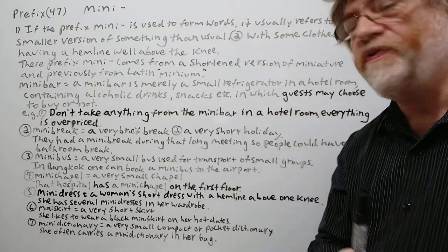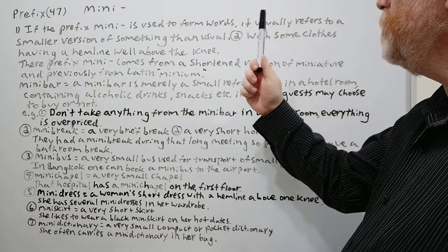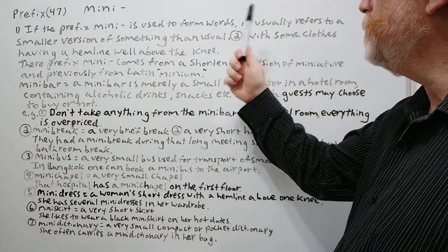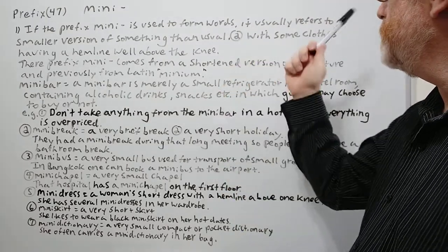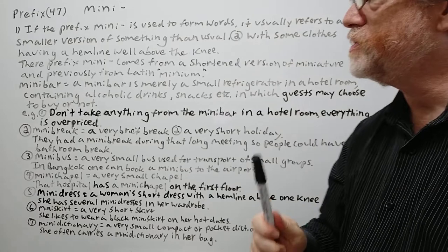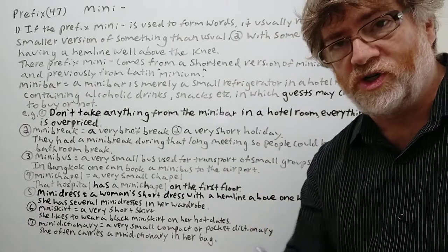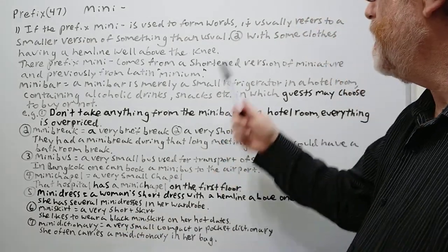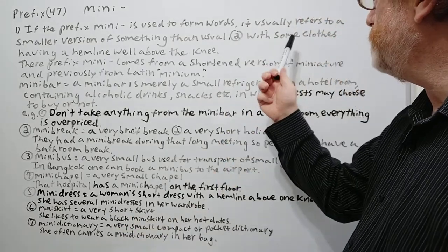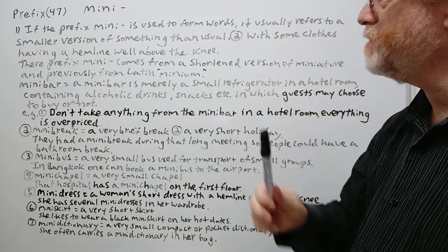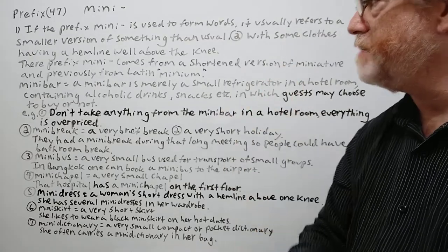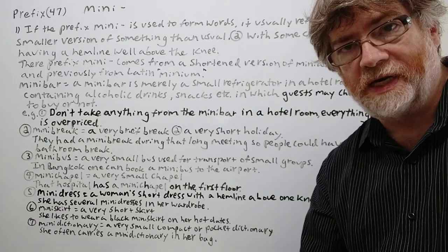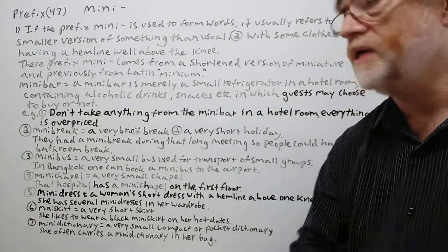If the prefix mini is used to form words, it usually refers to a smaller version of something — that is its main use. We have a second use here too: with some clothes, having a hemline above the knee.